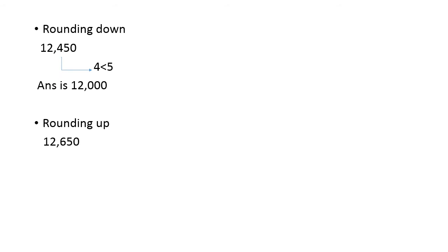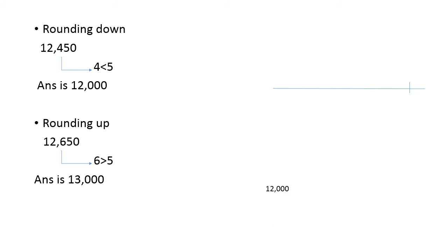Now look at the number 12,650. Rounding off to the nearest 1,000 — look at the hundreds place value. Here it is 6, which is greater than 5, so the answer is 13,000. On the number line, both 12,450 and 12,650 fall between 12,000 and 13,000. If the digit is less than 5, choose the lower number (12,000). If the digit is greater than or equal to 5, choose the larger number (13,000).